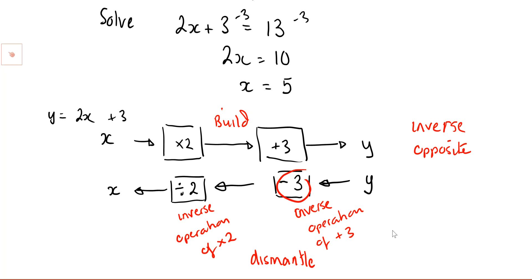The homework you just did was building an equation — that's the build — and this is the dismantle: take it apart to figure out where we started. When dismantling, you're also doing it in inverse order. The order is all-important: you can't just do the inverse operations in any order. If you divided by 2 first then subtracted 3, you'd get 13 divided by 2 which is 6.5 — it doesn't give the right result.